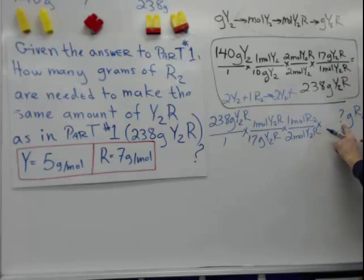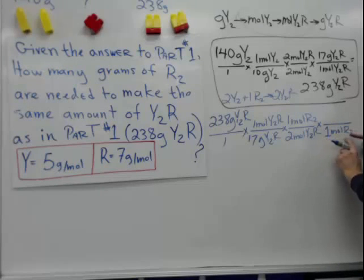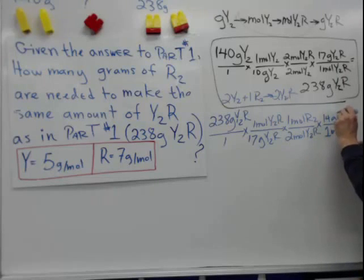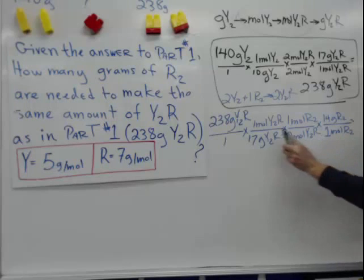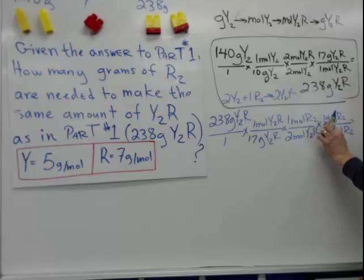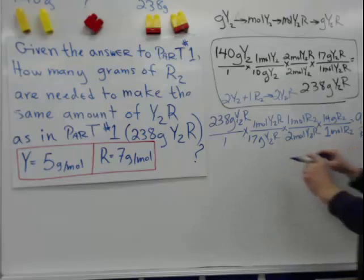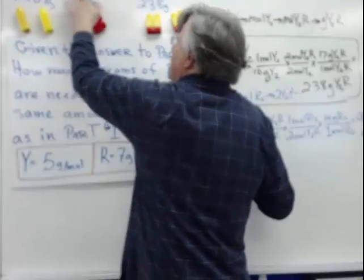Finally, we convert to grams of R₂. R is 7 grams per mole, so R₂ is 14 grams per mole. The math is: 238 ÷ 17 ÷ 2 × 14 = 98 grams of R₂. So 98 grams of R₂ is needed.